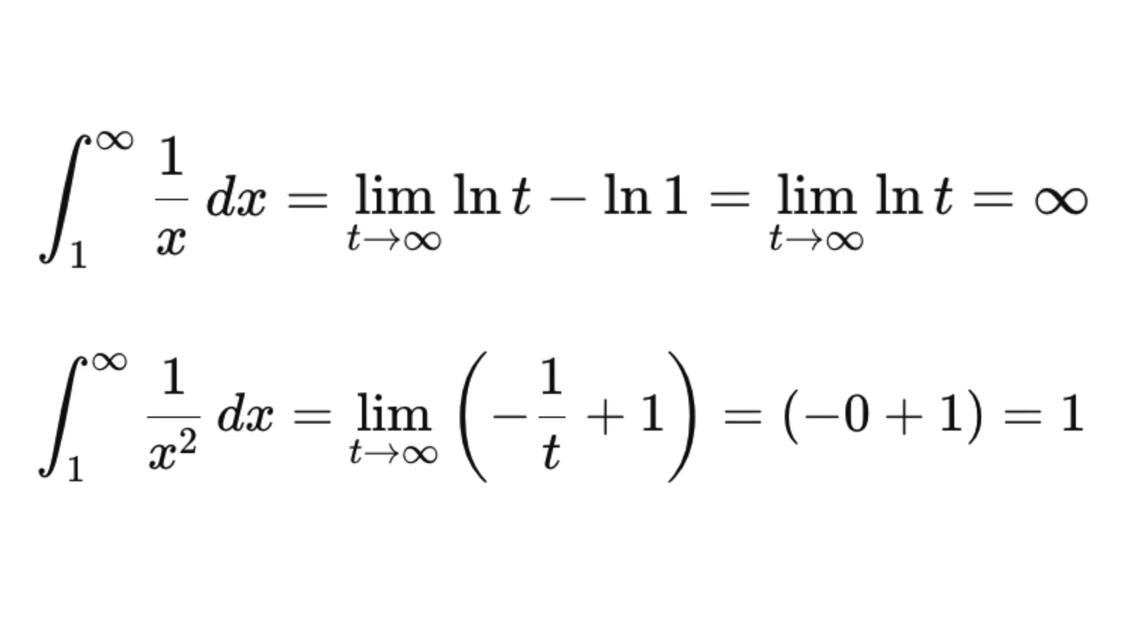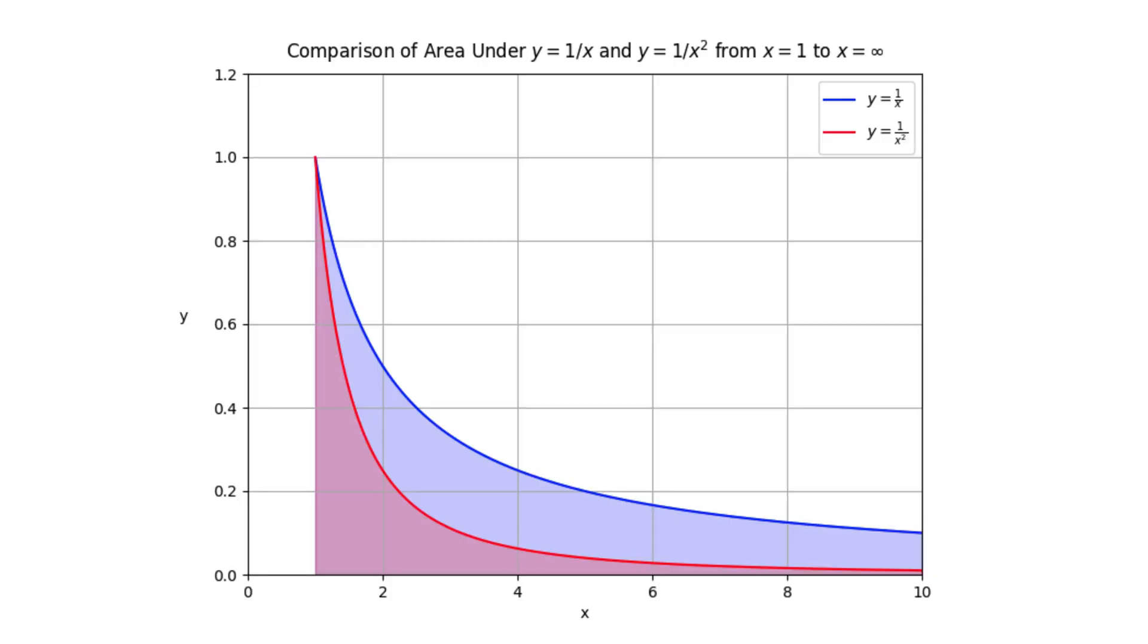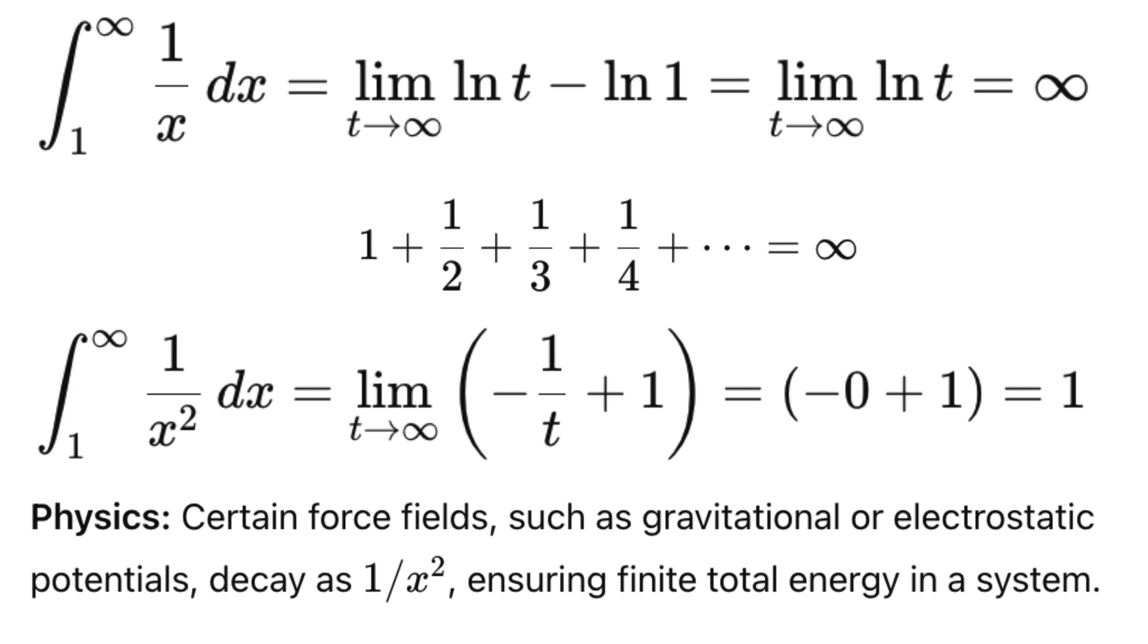This stark difference from y equals 1 over x is counterintuitive. The key lies in the rate of decay. 1 over x squared decreases so rapidly that the total accumulated area remains finite, while 1 over x declines too slowly, leading to divergence.